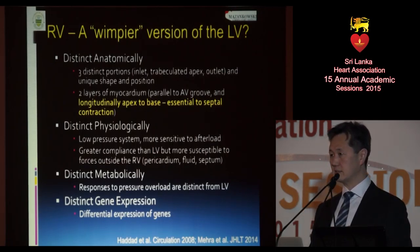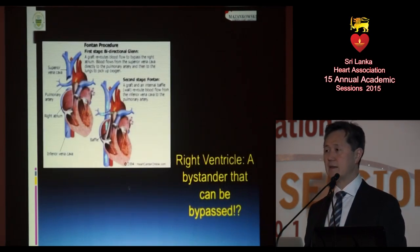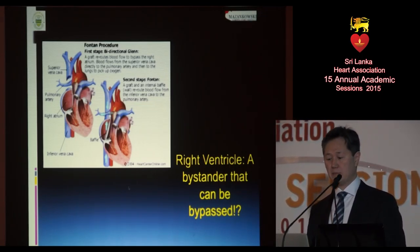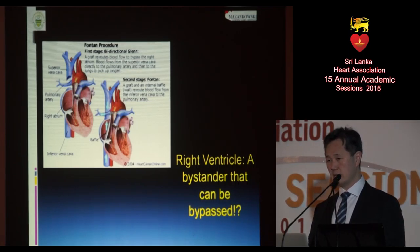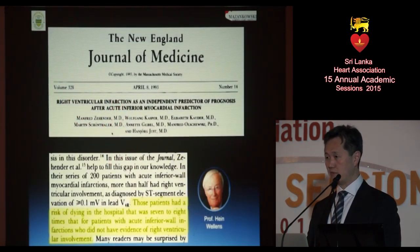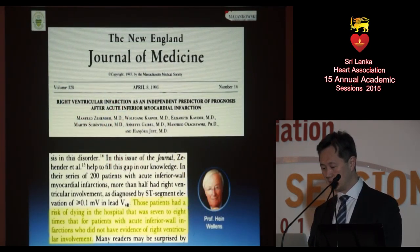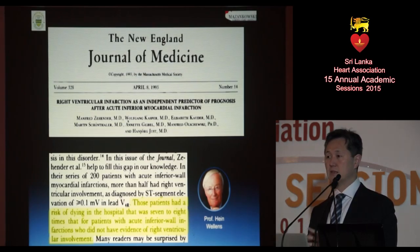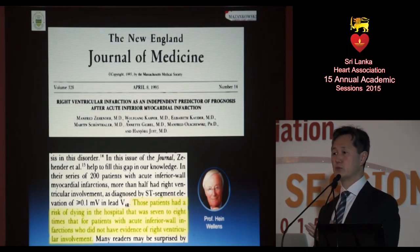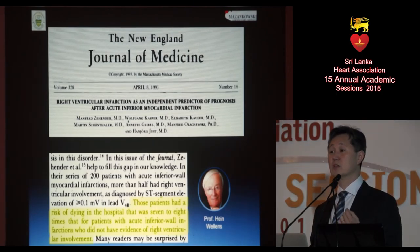Despite these distinct characteristics, most people don't really think about the right ventricle. Francois Fontaine didn't help, suggesting we could bypass the right ventricle in congenital heart disease patients and be just fine — making it look like the RV really didn't do anything. But in 1993, the German group from Zehender and colleagues showed that if you have a myocardial infarction with RV involvement, your mortality is quite high — 30% in the era before fibrinolytic therapy.